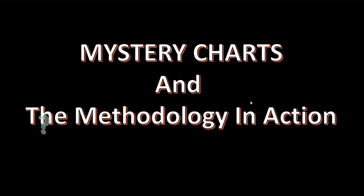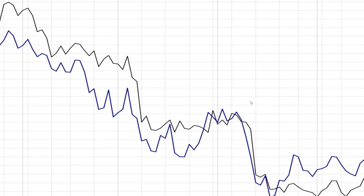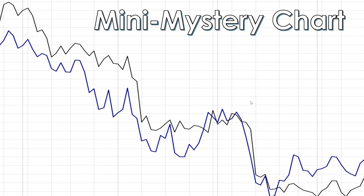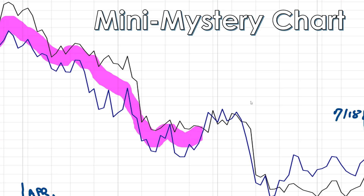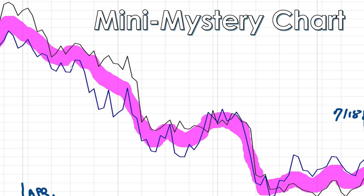Not a whole lot of methodology in action today, but I did want to show you a little mini mystery chart and reveal it to make a point. We've got two markets here going back to April, as of yesterday. If you draw a line between them, you can see for the most part they have nearly 100% correlation — meaning one goes up, the other goes up; one goes down, the other goes down. If I could raise one up to the other, they would almost have a 100% overlay.